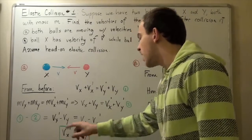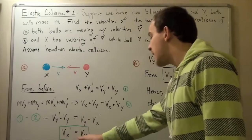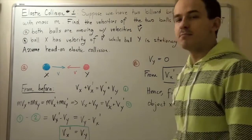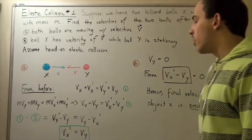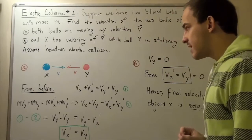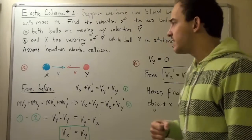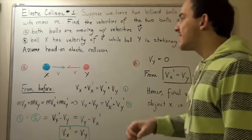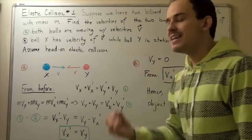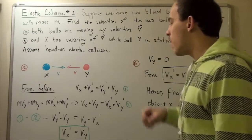We get 2*vx' = 2*vy. We simply divide by two and get this formula. This tells us that my final velocity of ball X is equal to the initial velocity of ball Y.